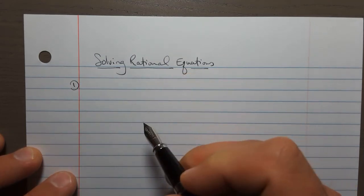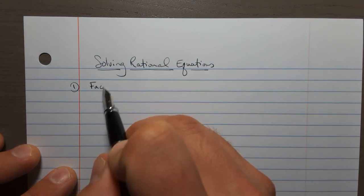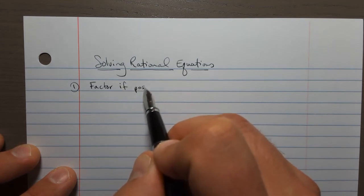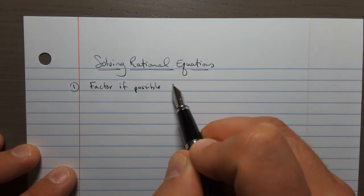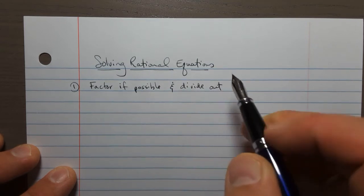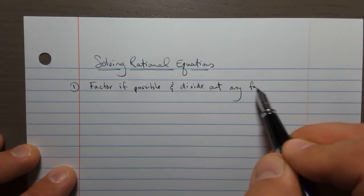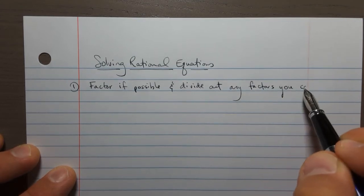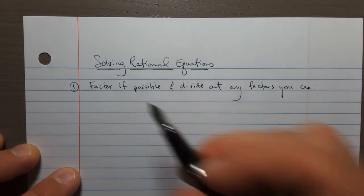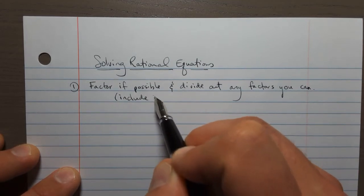So let's start off with the first part. When you have a rational equation, you typically want to try to factor, if possible, factor all of the parts of it. And then divide out any factors you can. The idea is that will simplify the expression overall. And I just want to mention one more thing, that when you do that, you have to include restrictions.